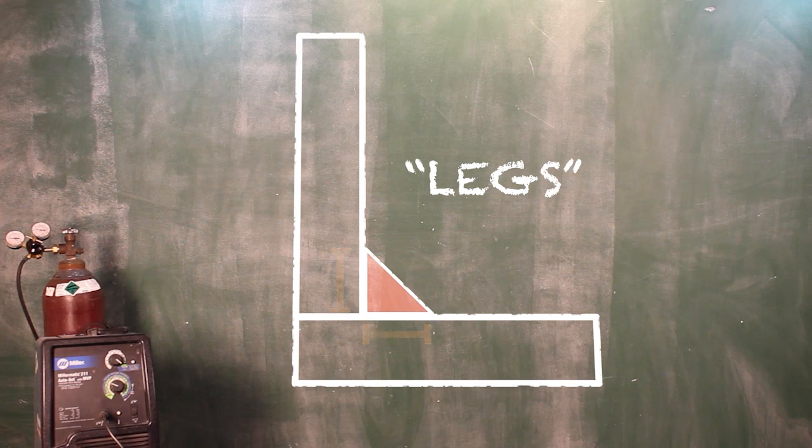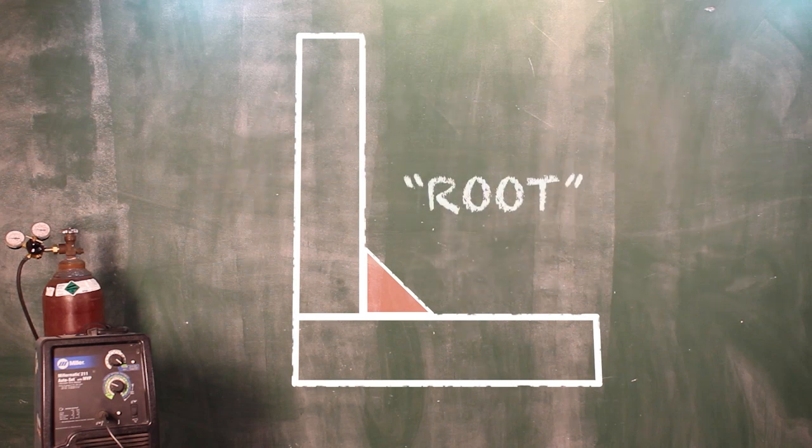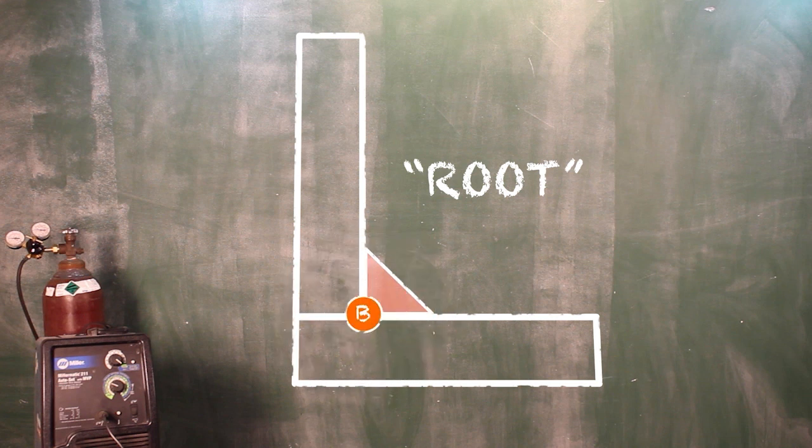The legs of the weld are the same terms that are used in basic geometry when referring to a triangle. Now, the root of the joint is what we have been referring to as the B line, which is where the two pieces to be welded are joined together.